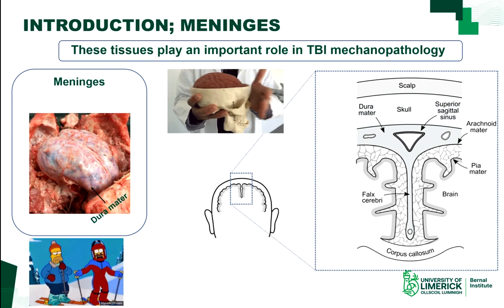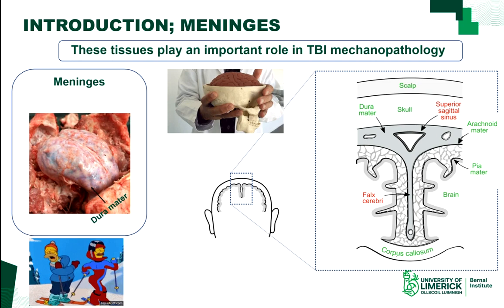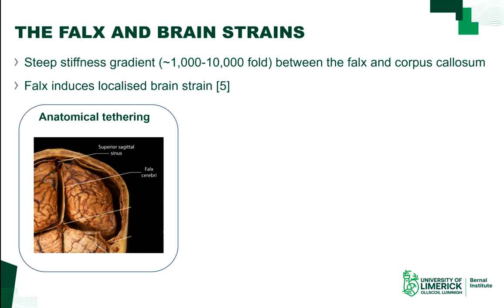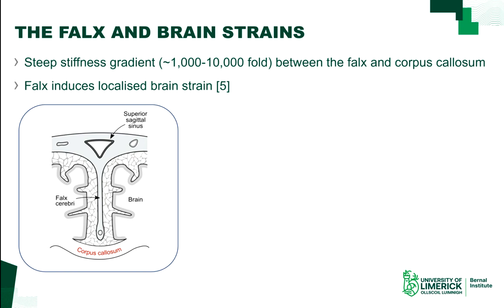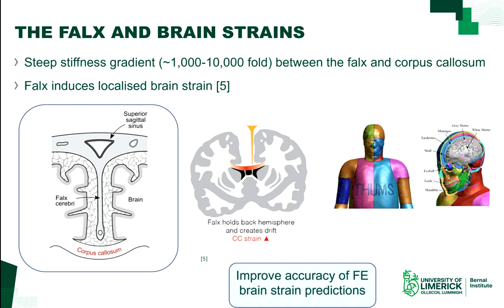Highlighted in green is what we know and in red what we do not know, so we have no mechanical models for these materials. This study is the first to characterize these tissues, with the falx cerebri being one of the most important tissues because of its steep stiffness gradient with the surrounding brain tissue left and right, and it has been shown in previous studies how important this tissue structure is.